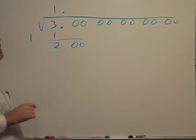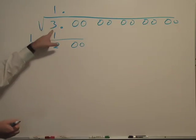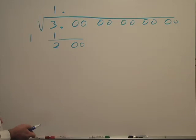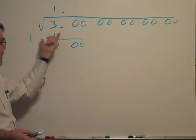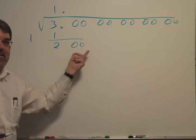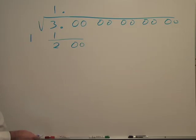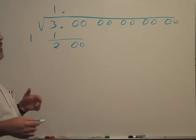Then I bring down the other two zeros. So I couldn't put 2 here because 2 times 2 would be 4, which is greater than 3. 1 times this number is of course 1. I subtract, bring down the first pair of zeros.